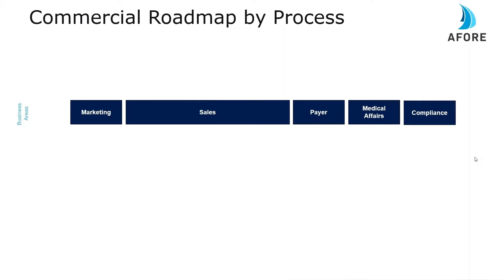I'm here to talk about what a commercial roadmap means and all the processes related to that. When I'm talking about a commercial roadmap, I'm talking about support for five groups: marketing, sales, payer or market access, medical affairs — referring to your MSLs and your people out in the fields — and your compliance team. While compliance typically isn't part of your commercial team, in today's world, compliance is a part of every decision you make.